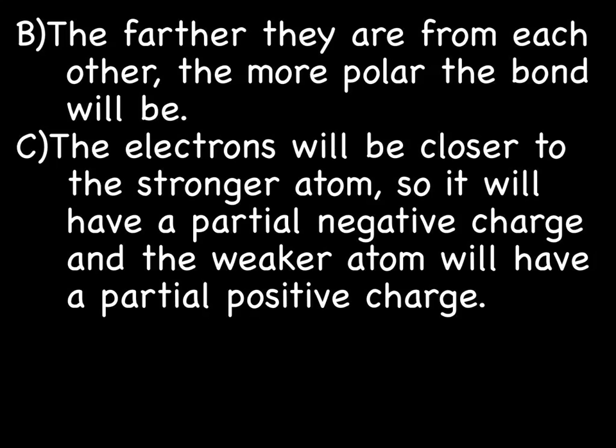So to continue discussing polar covalent bonds, the further they are from each other on the periodic table, the more polar the bond will be. Because remember, electronegativity increases going across, decreases going down, and so the greater distance between the two on the periodic table, the greater the difference in electronegativity or strength. So the electrons will be closer to the stronger atom. So that stronger atom will end up with a partial negative charge, and the weaker atom will end up with a partial positive charge.